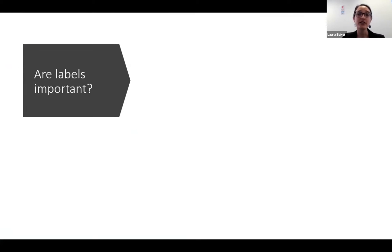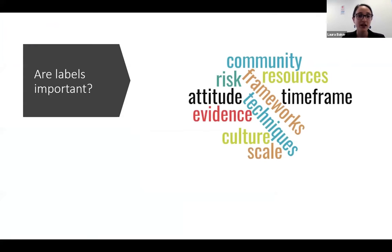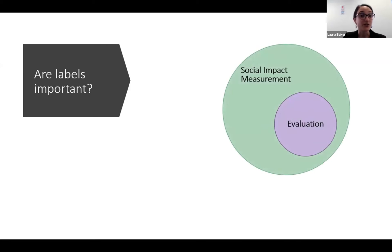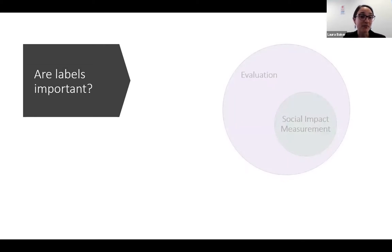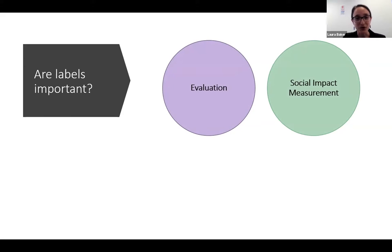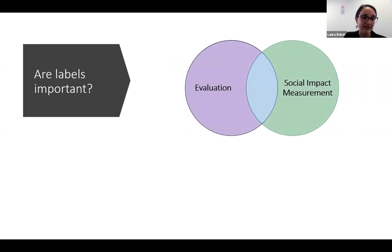With that background in mind, I wanted to talk through some of the similarities and differences between social impact measurement and evaluation. There are two different schools of thought on these ideas. Social impact measurement and evaluation are labels for sets of communities, cultures and attitudes. They often involve work of different scale, resources, timeframes and use different techniques. So one of the questions I wanted to ask is: are labels important? Does it matter what we call ourselves and our work? And where do our communities fit? Is evaluation a subset of social impact measurement, or social impact measurement a subset of evaluation, or are they two completely separate ideas?